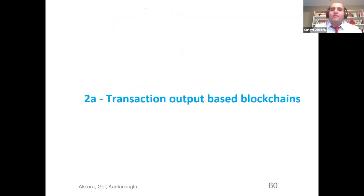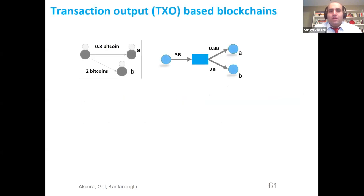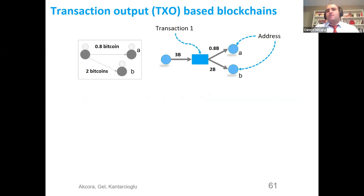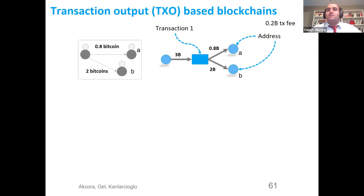I will start with discussing transaction output based blockchains and Ethereum. Here is the basic transaction on the left — a user is sending Bitcoins to A and B. The same transaction can be modeled with a graph structure where the transaction is shown with a rectangle and addresses are shown with circles. The amount that enters the transaction and the amount that exits are different; this difference is collected by the block miner as the transaction fee.